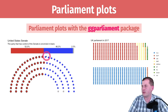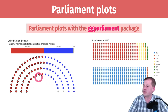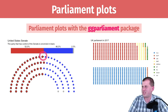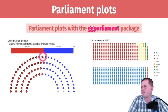You can see that 46% of the Senate was Democratic and 52% was Republican, so they were in power — I think this is from 2012 or 2014.